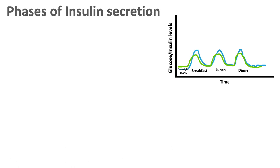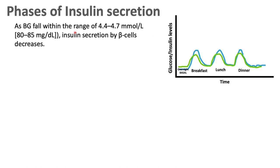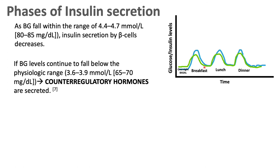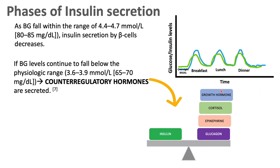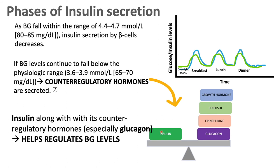We now know what triggers insulin and the two phases of release. As glucose spikes, insulin spikes; as blood glucose declines back to 4.4 to 4.7 mmol/L, insulin also declines to basal levels. If blood glucose falls too low — 3.6 to 3.9 mmol/L — it pushes us into the risk of hypoglycemia. The body responds by releasing counter-regulatory hormones — growth hormone, cortisol, epinephrine, and especially glucagon — which counteract insulin's effect and raise glucose back up, maintaining overall blood glucose balance.